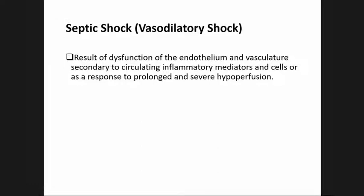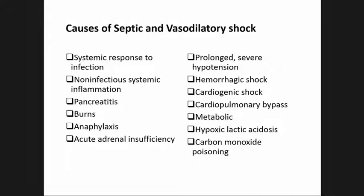Septic shock or vasodilatory shock results from dysfunction of the endothelium and vasculature secondary to circulating pro-inflammatory mediators and cells, or as a response to prolonged severe hypoperfusion. In vasodilatory shock, hypotension results from failure of vascular smooth muscle to constrict appropriately. This is characterized by vasodilatory lesion with resultant hypotension and resistance to treatment with vasopressors. Causes include systemic response to infection, non-infectious systemic inflammation, pancreatitis, burns, anaphylaxis, acute adrenal insufficiency, prolonged severe hypotension, hemorrhagic shock, cardiogenic shock, cardiopulmonary bypass, metabolic and hypoxic lactic acidosis, and carbon monoxide poisoning.